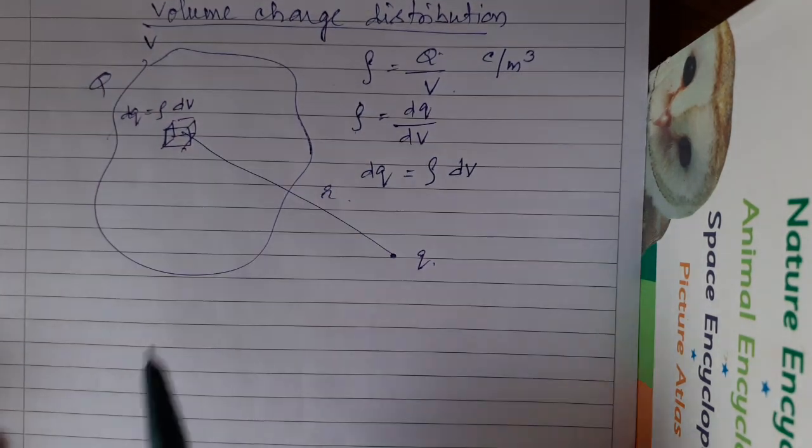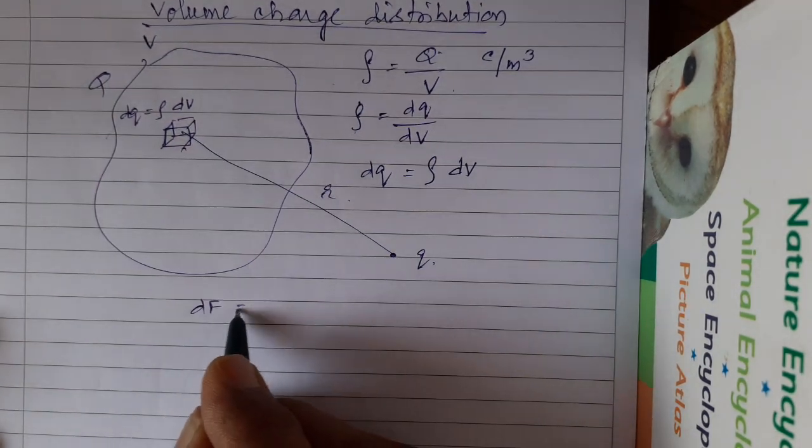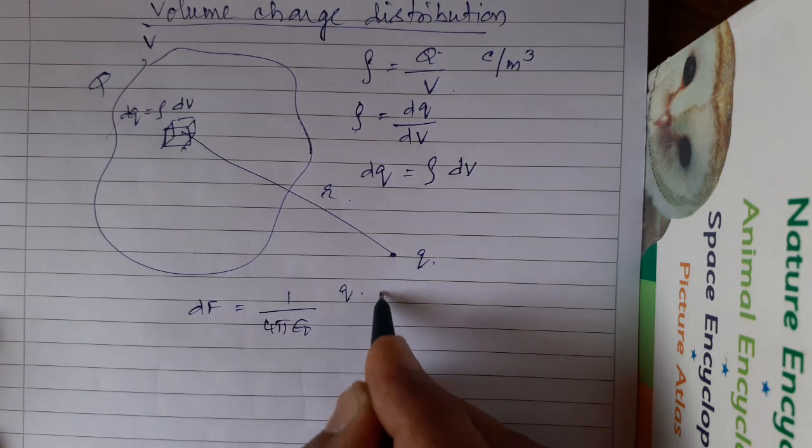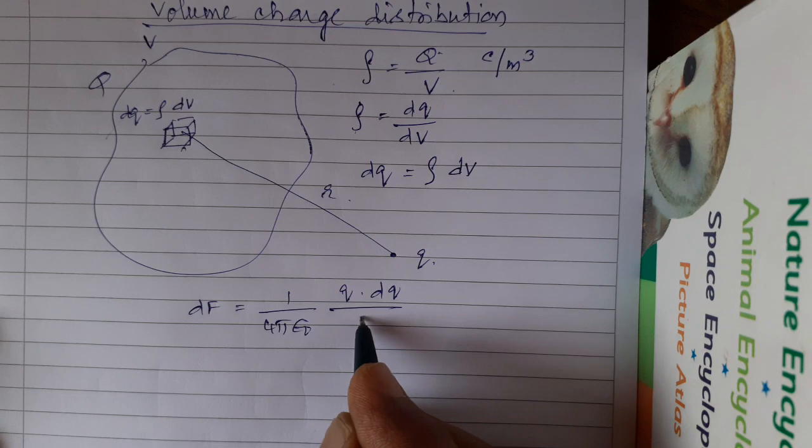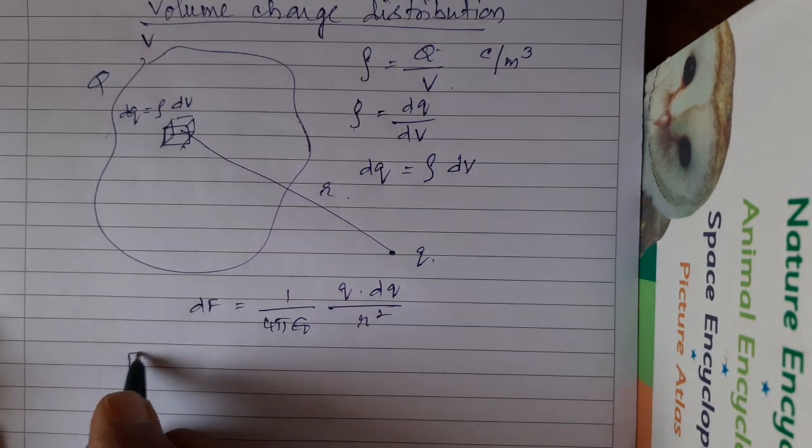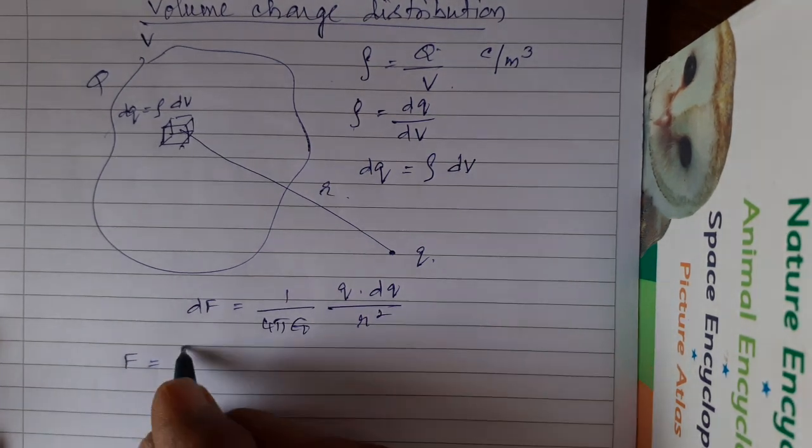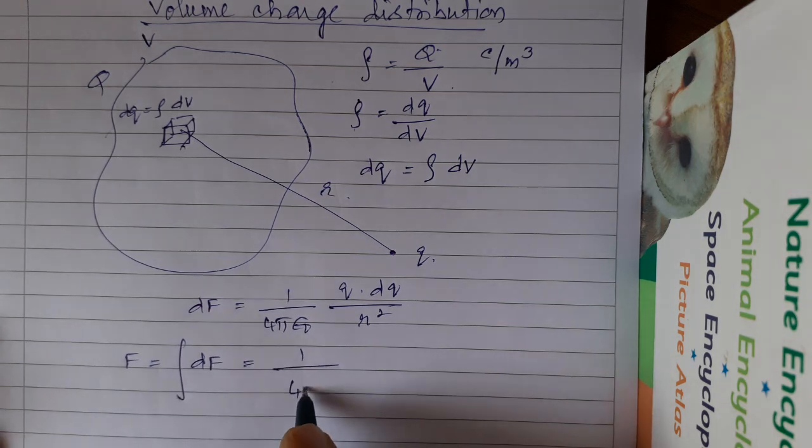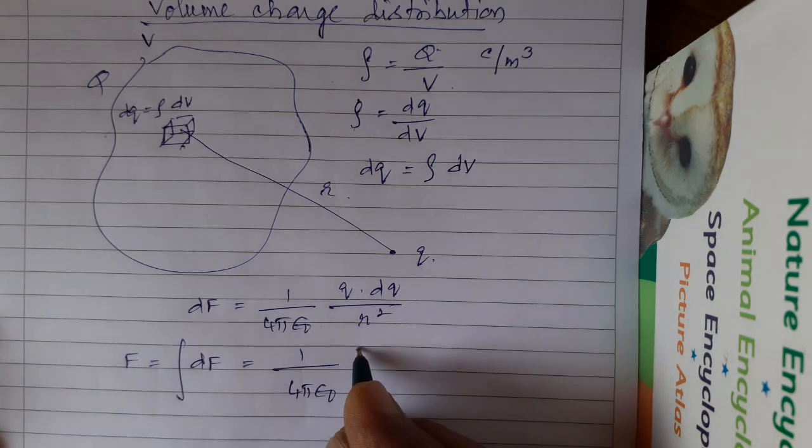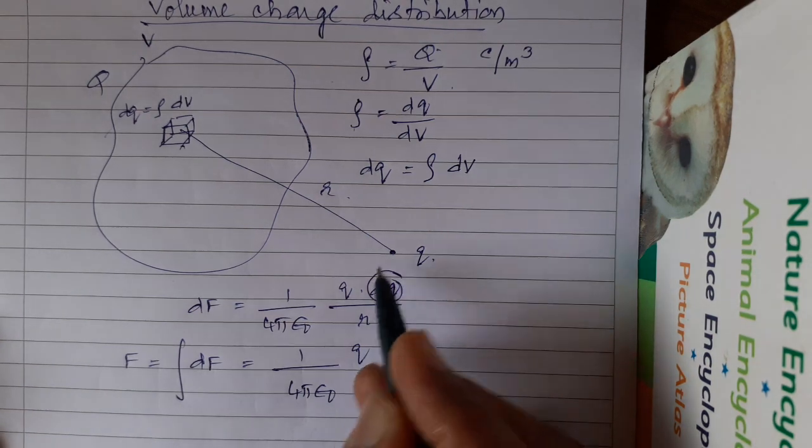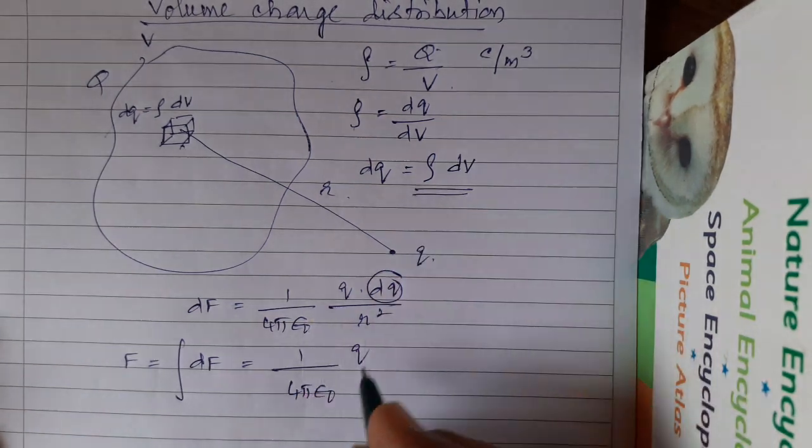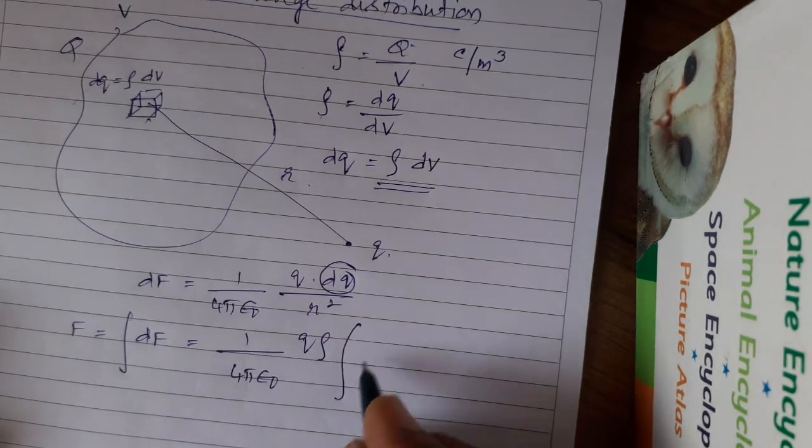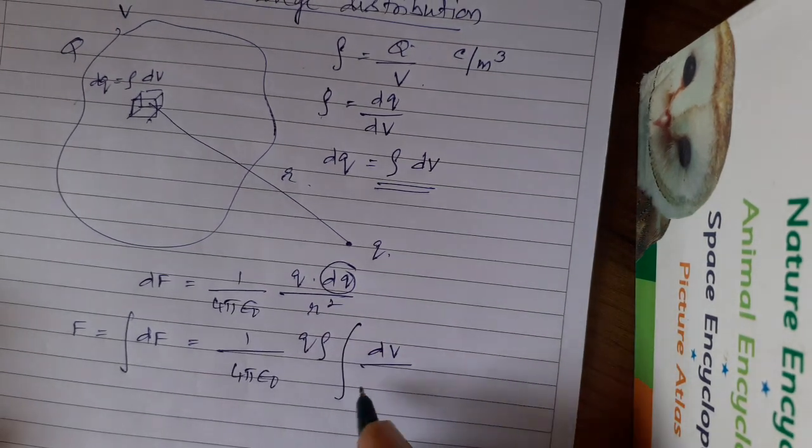Separation is R. Just like in the previous case, we can go for dF is equal to 1 by 4 pi epsilon naught Q dQ by R square. If you want to find the total force, we have to go for integration of dF. So 1 upon 4 pi epsilon naught Q, I can take dQ as rho dV. I take it as rho. Integral dV by R square.